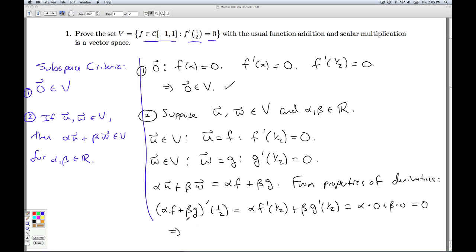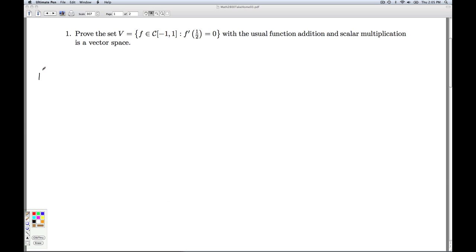That means that alpha u plus beta w is in fact in V, because when I take its derivative at 1/2, it's 0. Hence, V is a subspace of C[-1,1], and is thus a vector space in its own right. That'll do it for number one.